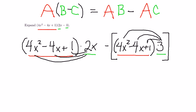2x times 4x squared, 8x cubed. 2x times 4x is 8x squared, but there's a minus, and of course 2x.